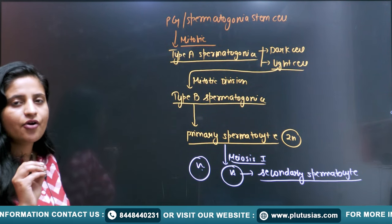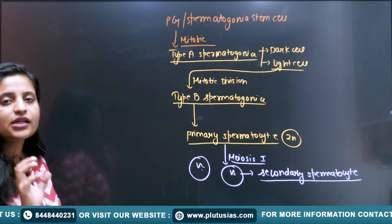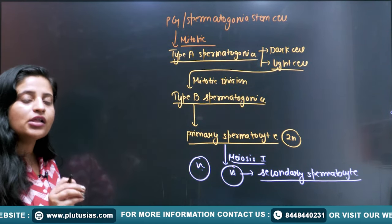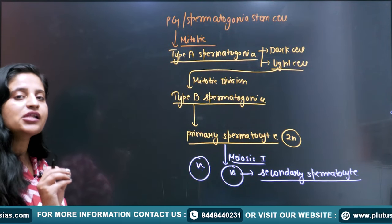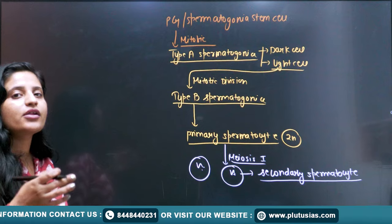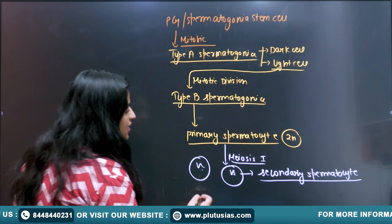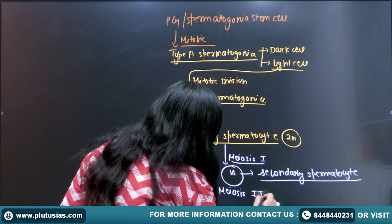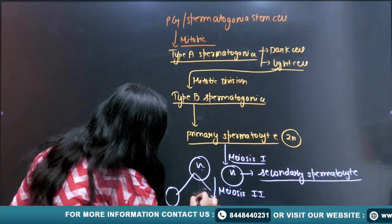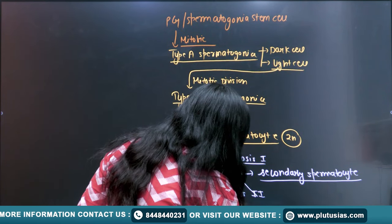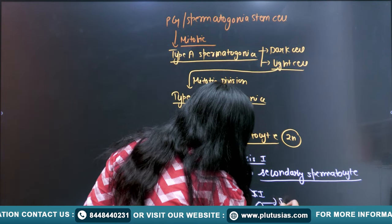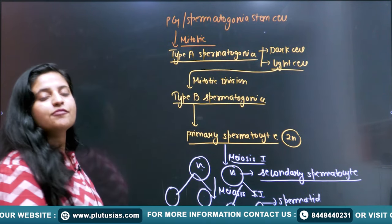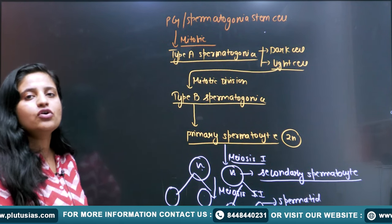The secondary spermatocyte undergoes meiosis II and becomes the spermatid. The process from primordial germ cell all the way to the spermatid is known as spermatocytogenesis. In the seminiferous tubules, Sertoli cells give nourishment and maturity to the developing male germ cells.